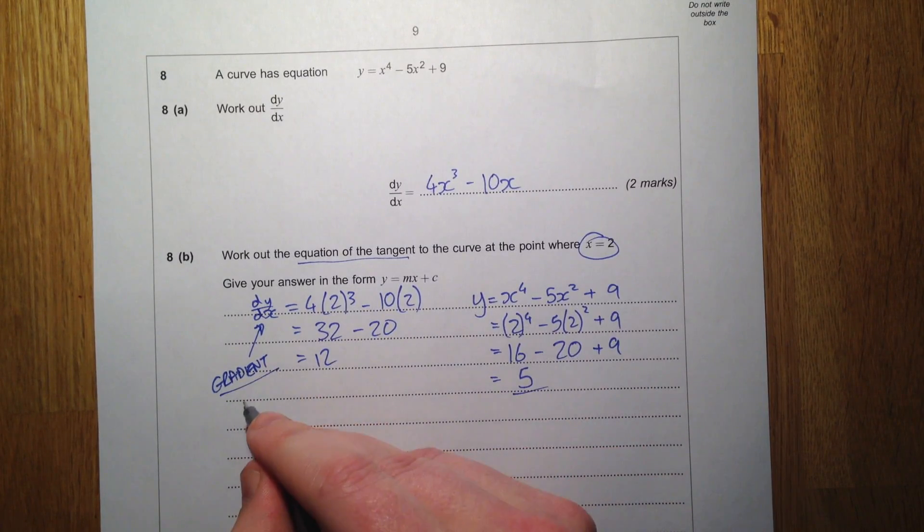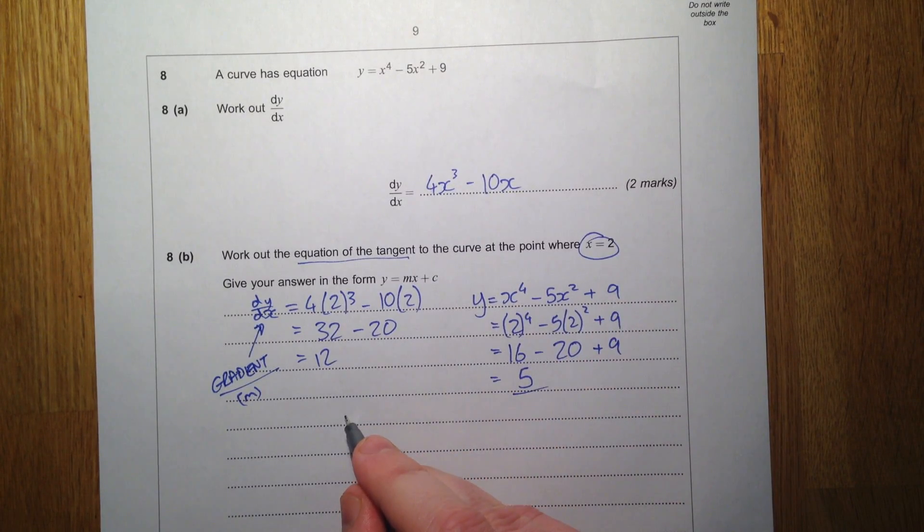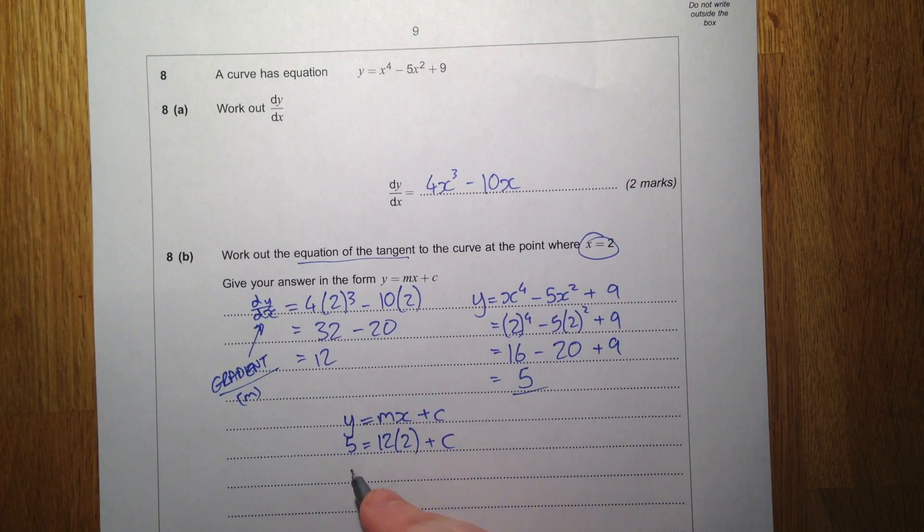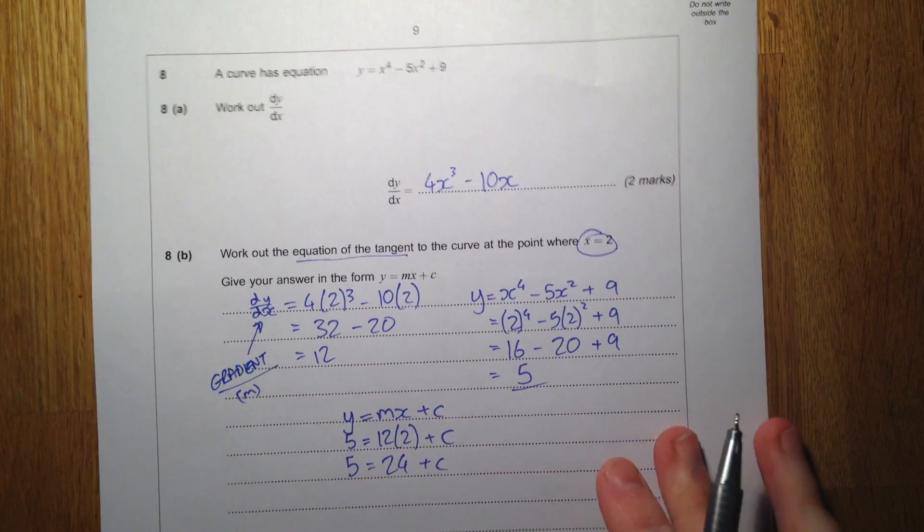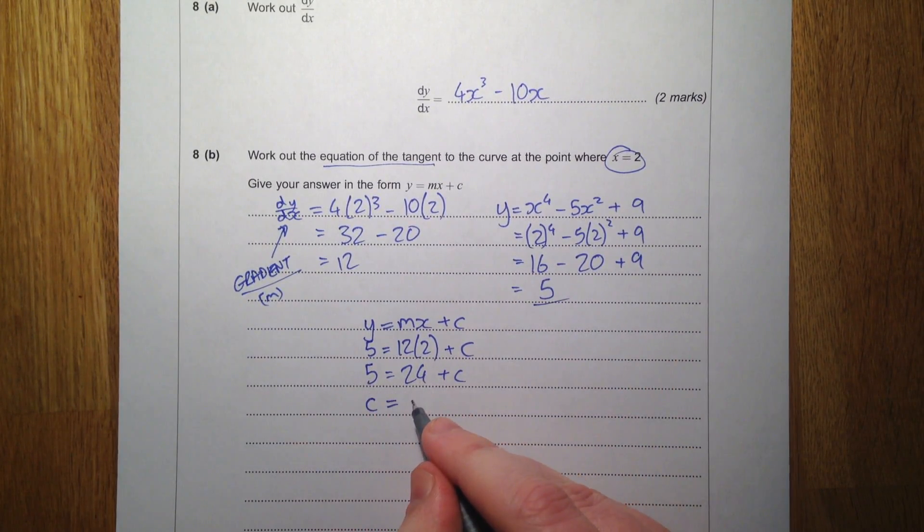We've got a value for gradient which is m, and we've got a value for x. So if we write out an equation, a general equation of a line is y equals mx plus c. Here's our y, here's our m, here's our x, and we don't have a c, so we're trying to work that out. So 5 equals 12 times 2 is 24, plus c. Take away 24 from both sides, so we get 5 take away 24, which is negative 19.